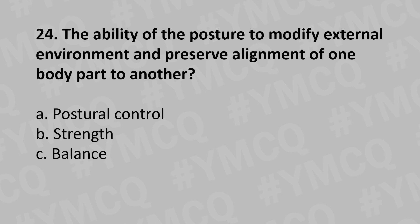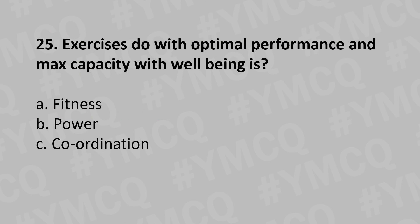Moving to our 24th question: the ability of posture to modify the external environment and preserve the alignment of one body part to another is called: Option A: Postural control, Option B: Strength, Option C: Balance. And the answer is Option A: Postural control.